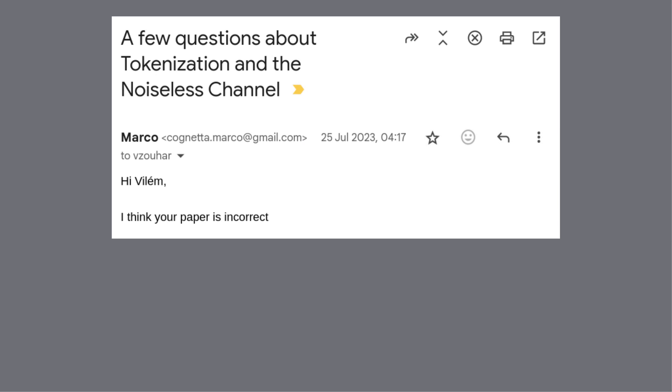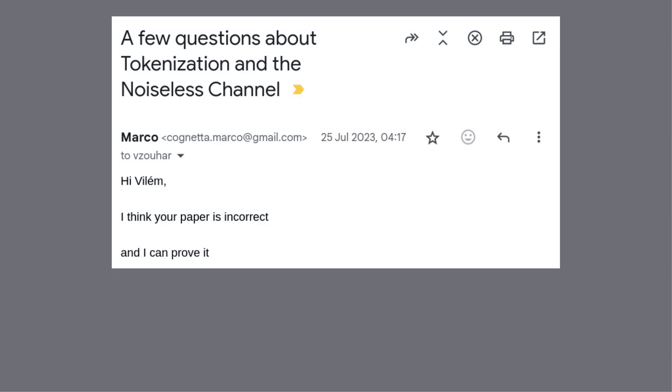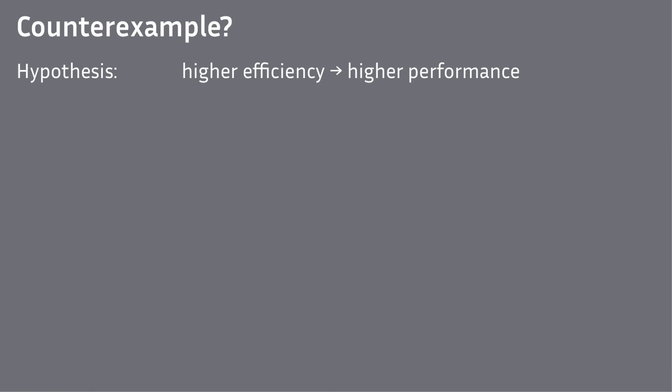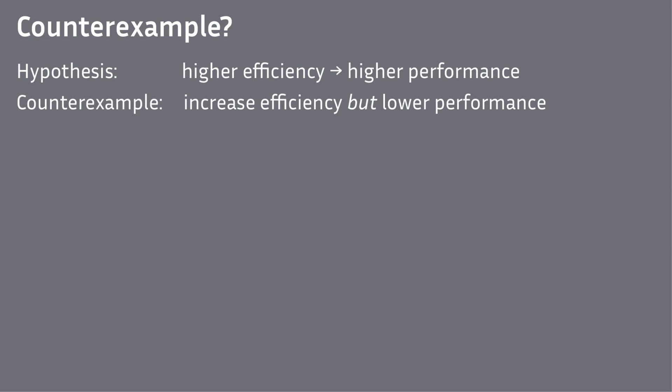The first is that someone tells you that your paper is wrong. The second, even worse, is that they tell you they can prove it. It wasn't exactly like this — instead, we began working together and were able to create some counterexamples to the hypothesis in the previous paper.